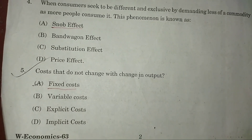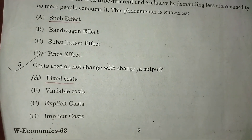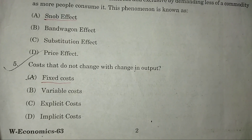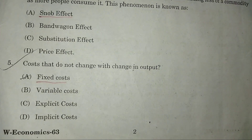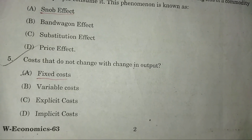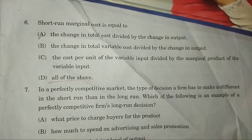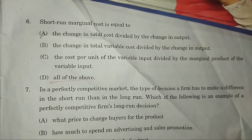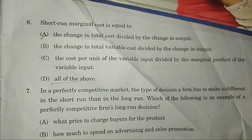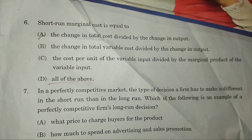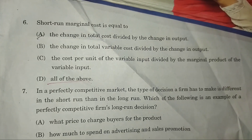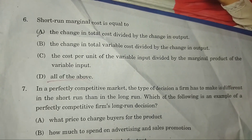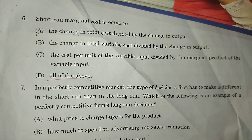Question 5: Costs that do not change with change in output are fixed costs. Question 6: The short-run marginal cost curve is equal to the change in total cost divided by change in output.